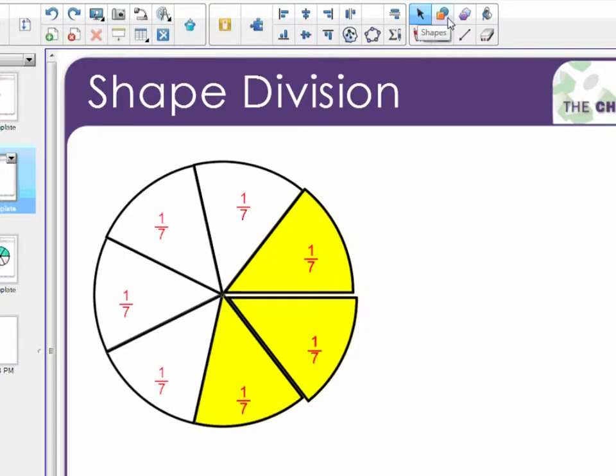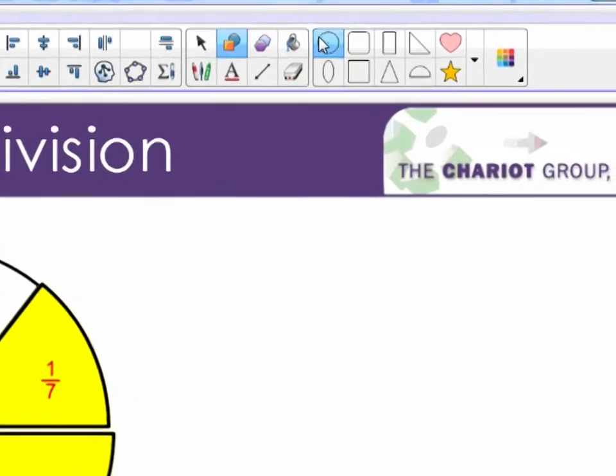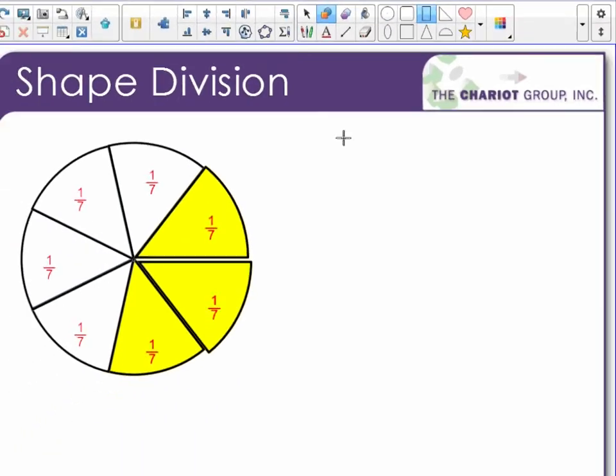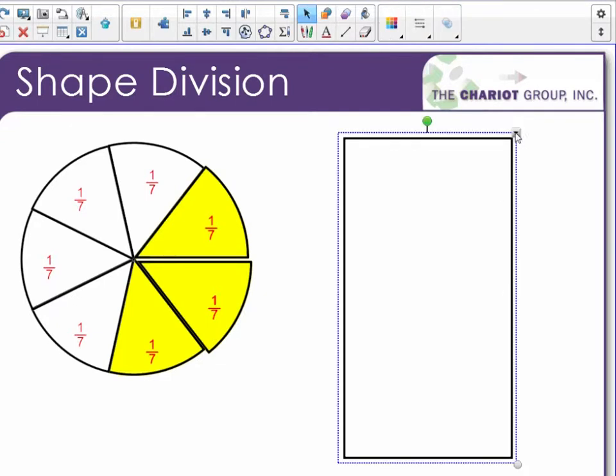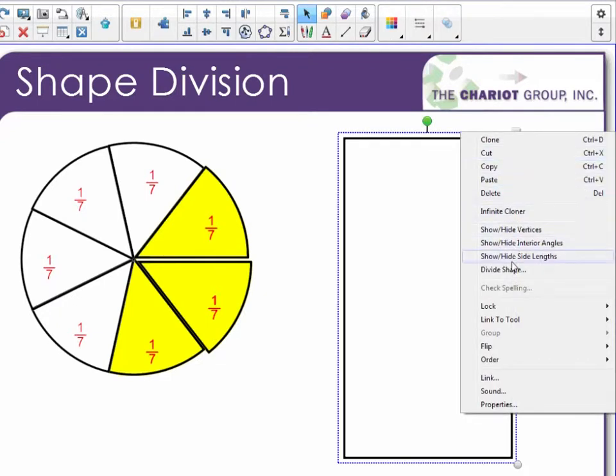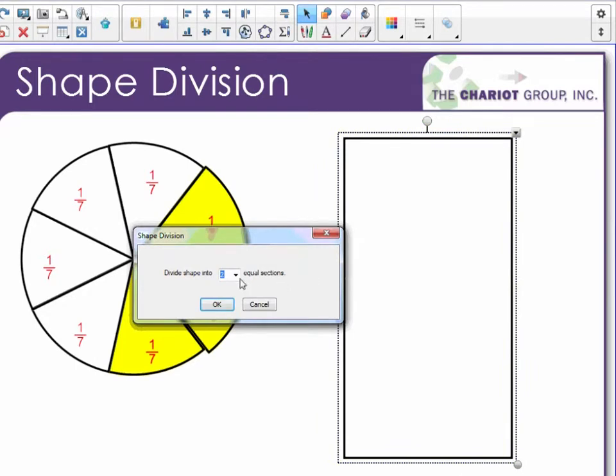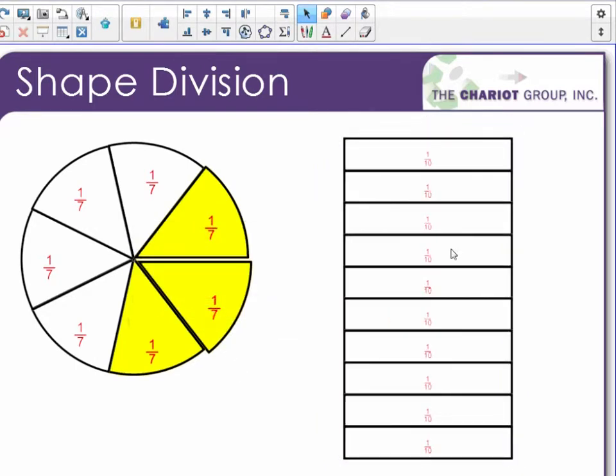I can also divide rectangles and squares. So if I come up to the shape tool, I'll select a rectangle, click and drag to draw my rectangle, click on the edge to select it, hit the drop-down box, and go to divide shape. This time I'm going to divide it into 10 equal parts. Click OK and notice how it is divided into 10 equal sections.